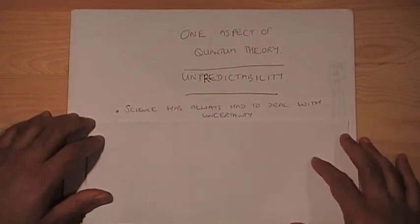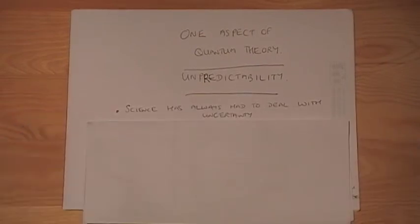So science has always had to deal with uncertainty. It doesn't matter whatever scientific laws we've believed in throughout the centuries. Whenever we try and apply those laws to real physical situations we always find that nothing behaves ideally. And we can't always predict what's going to happen.